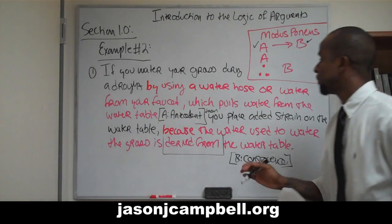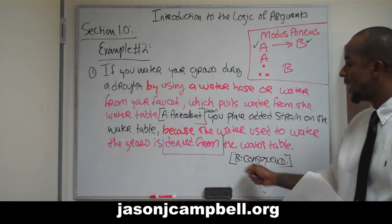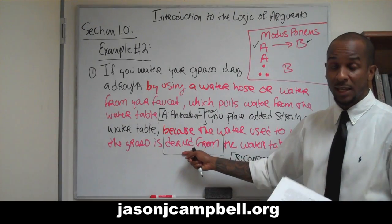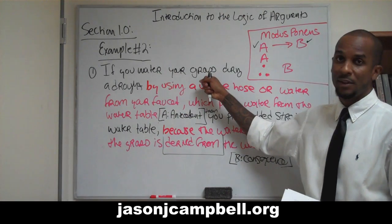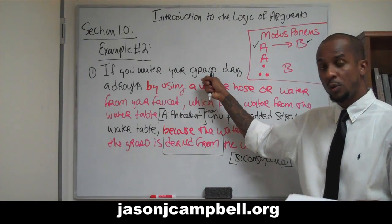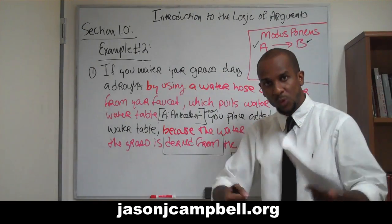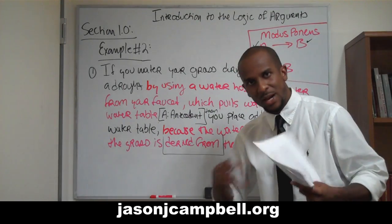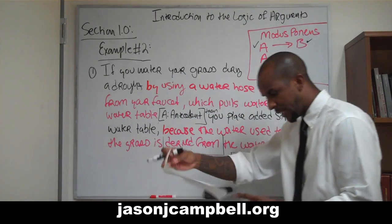In my consequence, you don't have to use the same terminology, but in my consequence I'm letting you know that I'm justified. My argument is inherently solid because I'm telling you that the source of the water you use to water your grass — irrespective of whether it comes from the faucet or the hose — both of these two different sources derive water from the same place: the water table. Which is exactly why the argument is as consistent as it is. So I've already augmented the nature of the argument.